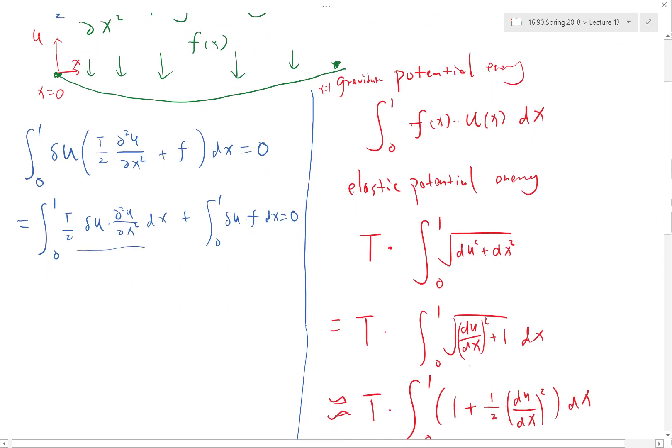So here we have one function of x in a second order derivative and another function of x delta u without any derivatives. Is there any way to equalize the amount of differentiation we are taking to these two functions? That way to take one of the derivatives that applies to this function and apply it to that function. That is integration by parts.